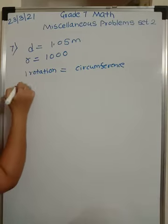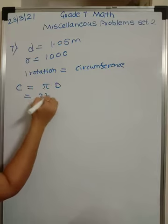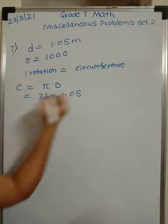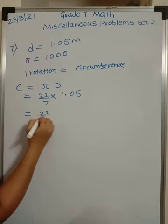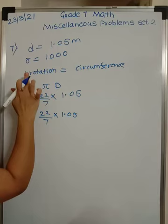So let us calculate first circumference. It is π D. So that would be 22/7 into 1.05 meters. So this would be equal to 22/7 into 1.05. Now there are 1000 rotations.